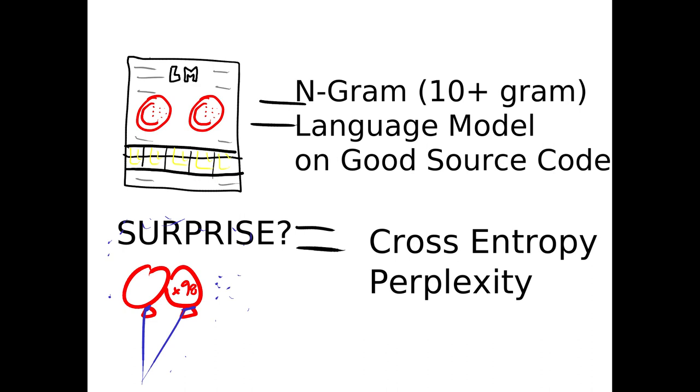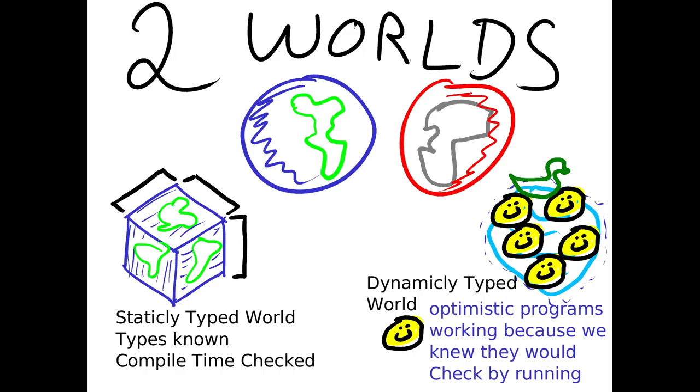The general gist is that we can train a language model on good code and it'll know it pretty well, and then when we give it bad code it'll be surprised by that.